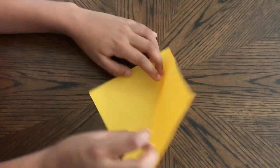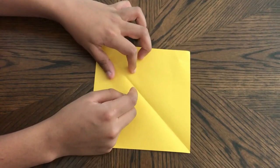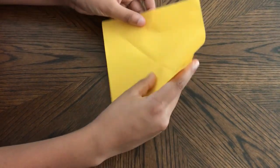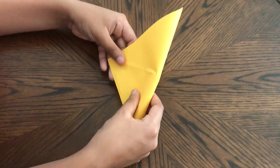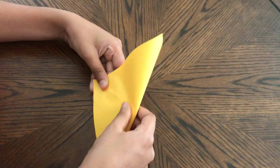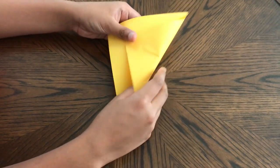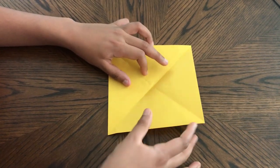And then unfold that, turn it around and repeat. So again, fold from that corner to that corner. Now there should be an X in the middle of your paper.